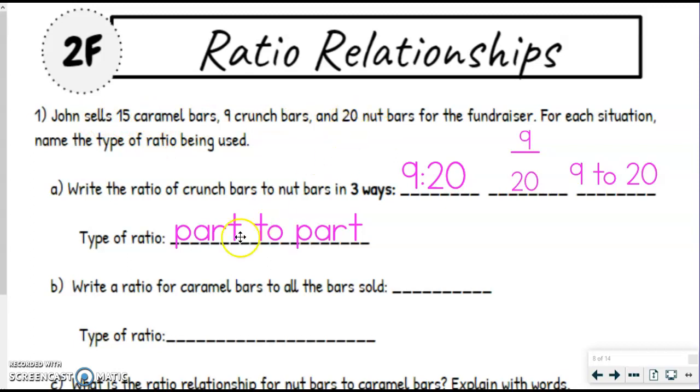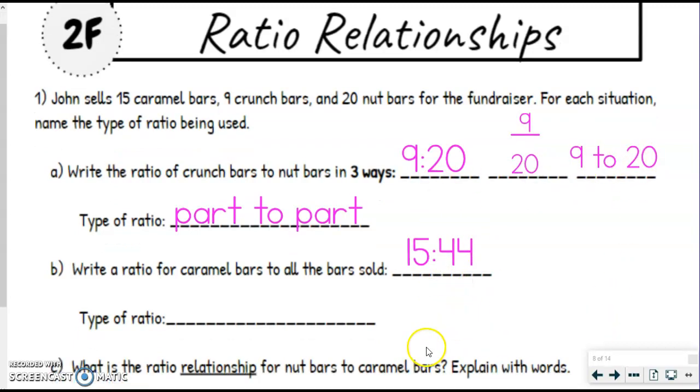So we're adding all three numbers together, and that would be 44. If you need to do that off to the side, that's perfectly fine. But caramel bars is 15 compared to all the bars sold, which is 44. So 15 to 44. Again, you can use any of these ways that you prefer.